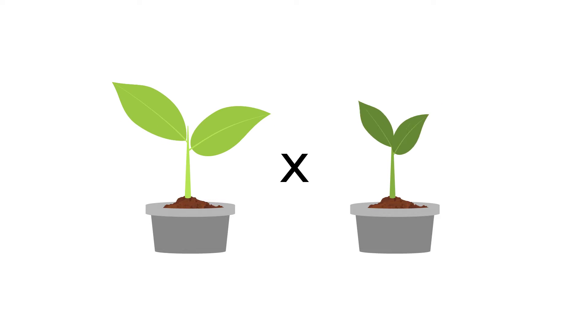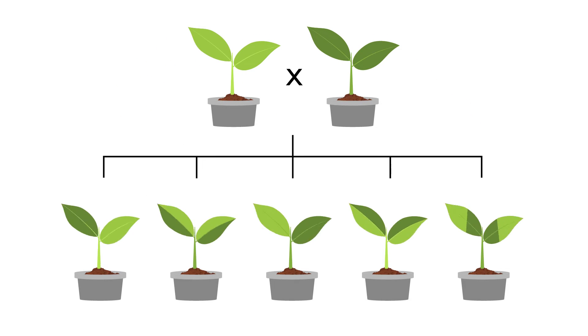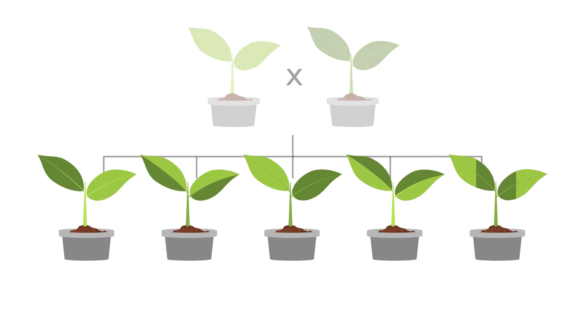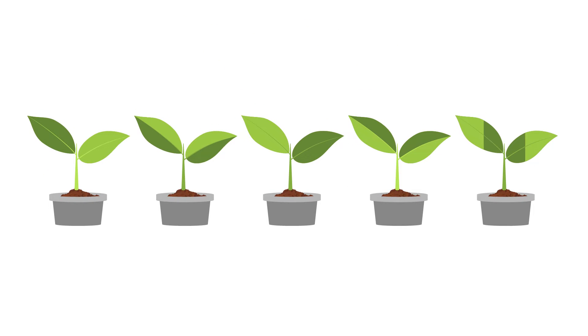When you cross two parents, the offspring inherit half of their genes from each parent. The mixture of genes inherited from each parent will be different for each offspring.